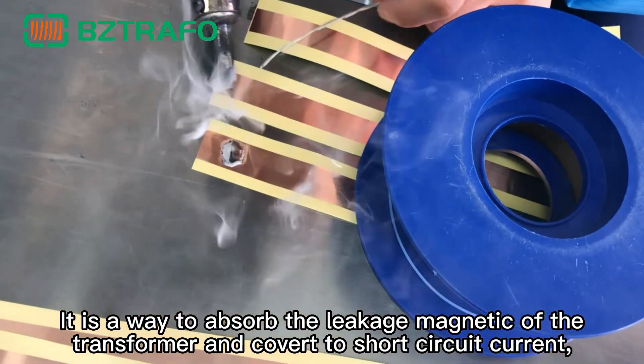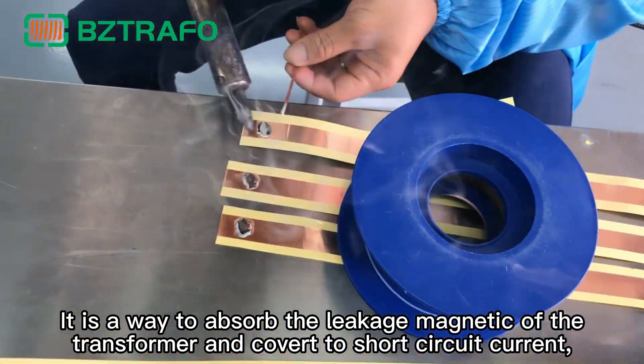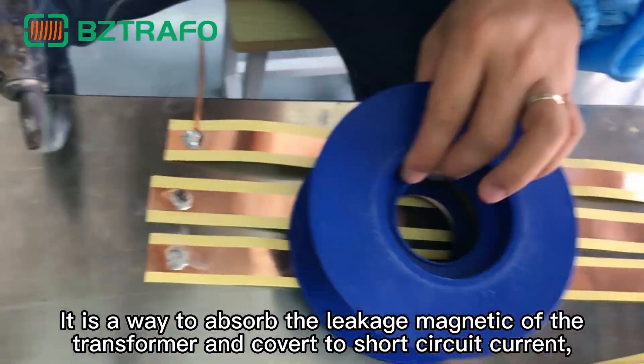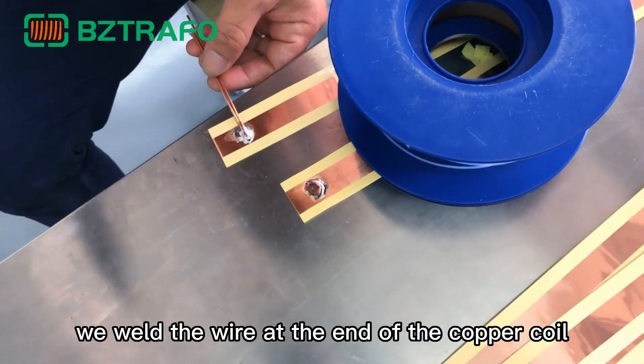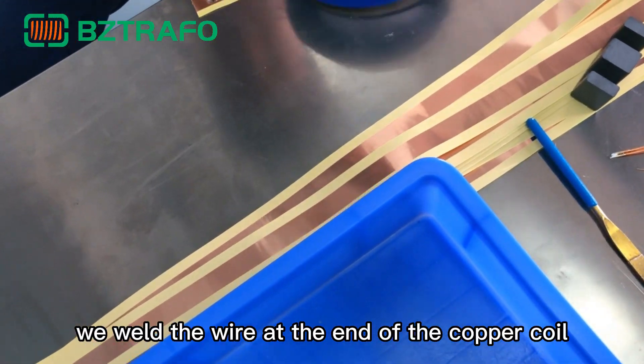Second, it is a way to absorb the leakage magnetic of the transformer and convert to short-circuit current so as not to interfere with the surrounding parts. At this time, we weld the wire at the end of the copper coil.